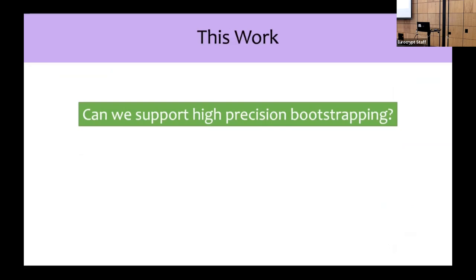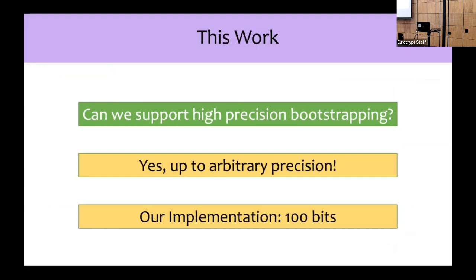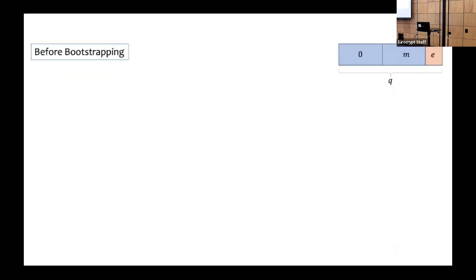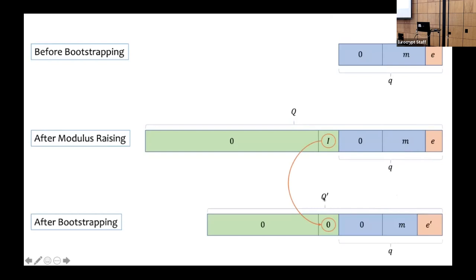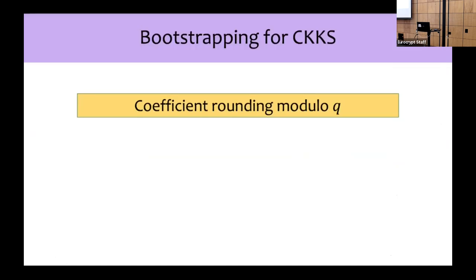In this work we ask: can we support high-precision bootstrapping? And we show yes, up to arbitrary precision — our implementation achieves 100 bits of precision. Bootstrapping begins with a ciphertext with no more excess ciphertext modulus bits. The first step is to view this ciphertext as a ciphertext with respect to the largest modulus Q, which now encrypts q·i + m plus the error. The goal of bootstrapping is to homomorphically compute upon this ciphertext to recover a new ciphertext encrypting an approximation of m, with many excess ciphertext modulus bits left so that computation can continue.